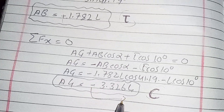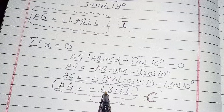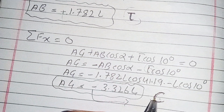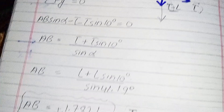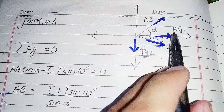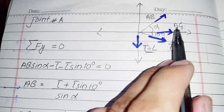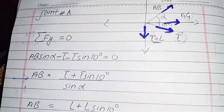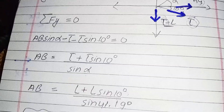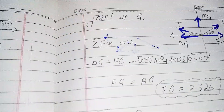AG equals negative 3.326L. The negative sign shows my assumption was wrong — it is not in tension, it is in compression.